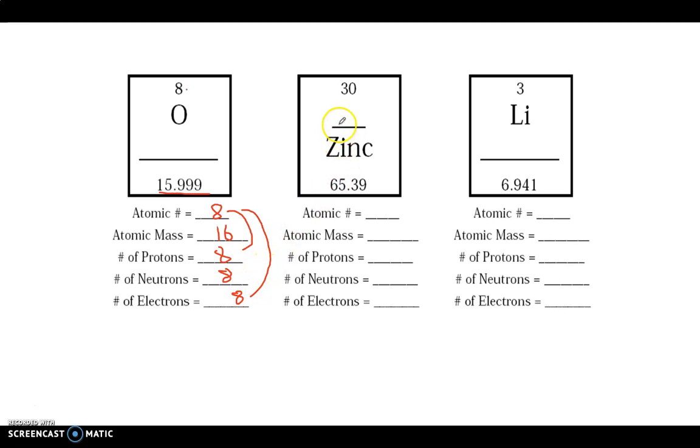Let's do zinc together. Zinc is Zn on the periodic table. Its atomic number is 30. Its atomic mass, we round down to 65. Number of protons is the same as the atomic number. Number of neutrons is the mass take away the atomic number, which gives me 35 neutrons. 35 neutrons plus 30 protons gives me an atomic mass of 65. Number of electrons is the same as the number of protons, which is 30.